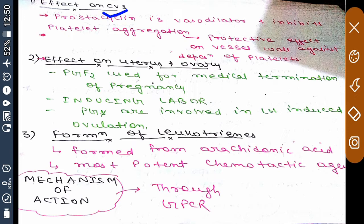Prostacycline, which is formed from prostaglandin, is a vasodilator and inhibits platelet aggregation, so it is protective. It has a protective effect on vessel walls against the deposition of platelets, which may lead to embolism formation.